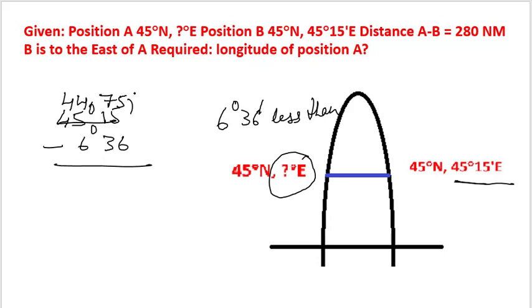This we can write as 44 degrees 75 minutes - why 75? 60 minutes plus 15 minutes, so 75 minutes. Subtract: 75 minus 36 equals 39 minutes, and 44 minus 6 equals 38. So this will be 38 degrees 39 minutes.